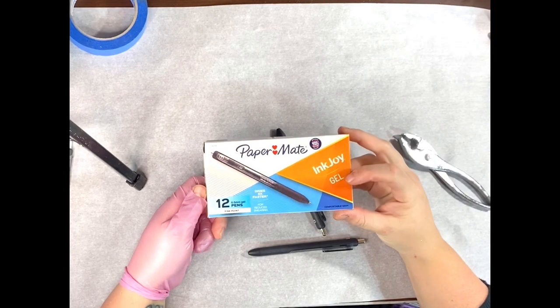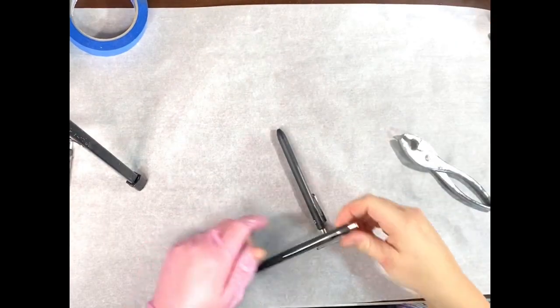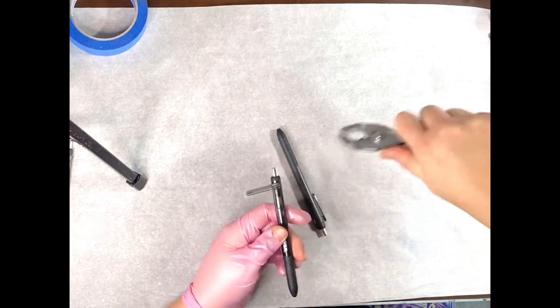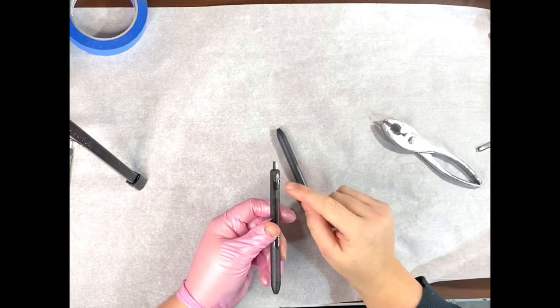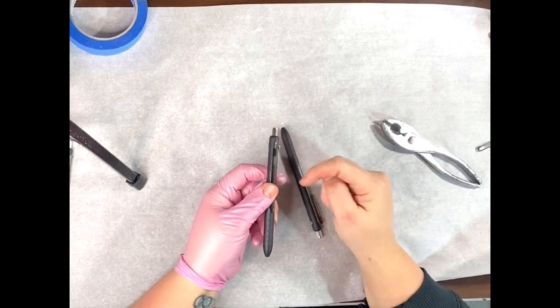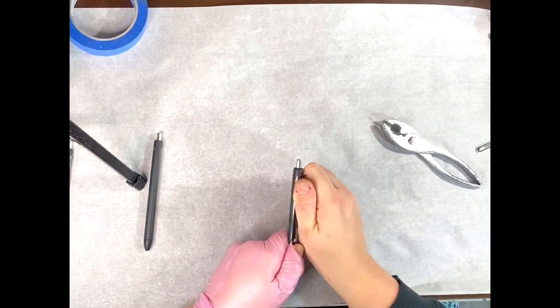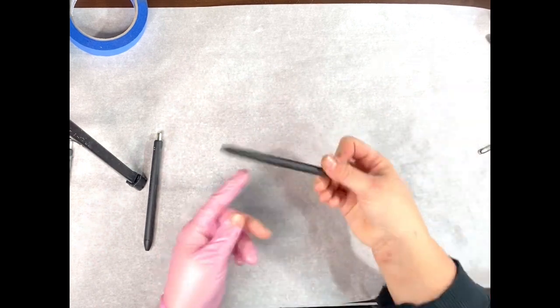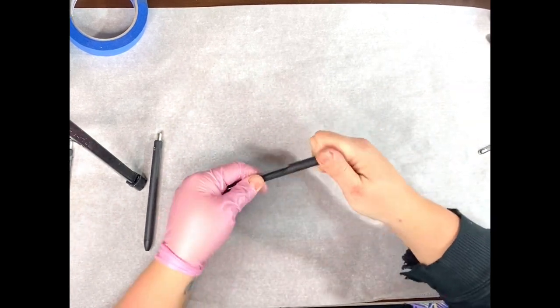You're going to need a Paper Mate Ink Joy pen to start. You're going to want to remove the little tab. You can use pliers or you can use your fingers. You just twist it off. Once you have the tab off, I take a craft knife and cut the little extra piece off. Then you're going to remove all the pieces of the pen. Put those in a safe place. You will need those for later.